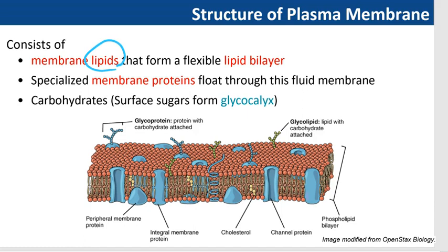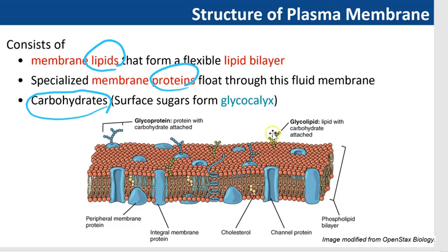Lipids, proteins, and carbohydrates are the molecules that make up the plasma membrane. The membrane lipids form a flexible lipid bilayer. Inside this membrane, specialized membrane proteins flow through this fluid membrane. Carbohydrates are molecules found outside of the plasma membrane — these surface sugars form the glycocalyx. In this picture of the plasma membrane, the red parts show the lipid bilayer, the blue color shows the protein, and the green color shows the glycocalyx — including glycolipids and glycoproteins — which is the carbohydrate part of the plasma membrane.